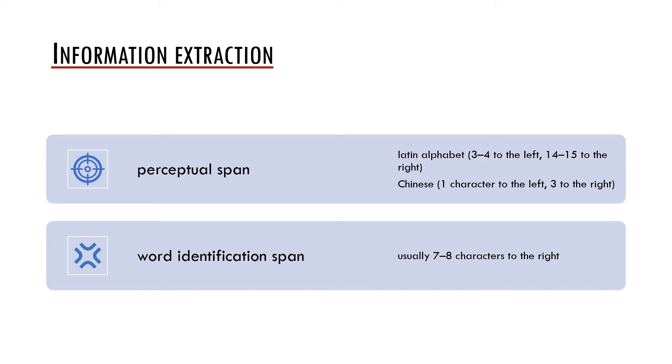What is well known is that while reading there is a difference between the so-called perceptual span and the word identification span. The perceptual span consists of three to four letters to the left of fixation and of 14 to 15 letters to the right of fixation. Importantly, in scripts which are written from right to left such as Arabic, the span is reversed and is longer to the left. The word identification span is shorter and usually it consists of seven to eight characters to the right of the fixation.